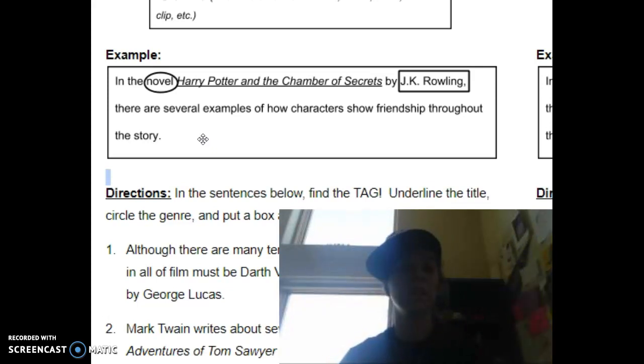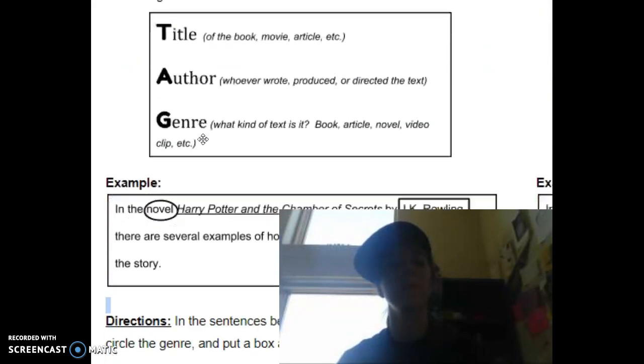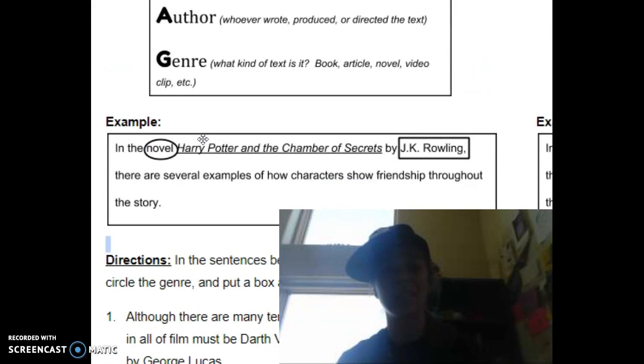Then it goes on to say, There are several examples of how characters show friendship throughout the story. So we need to make sure that always in our topic sentences, guys, we are making sure it says the title, author, genre. So make sure we know our reader knows what we wrote about.